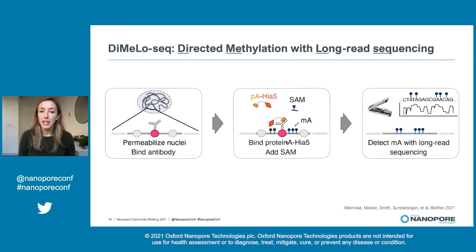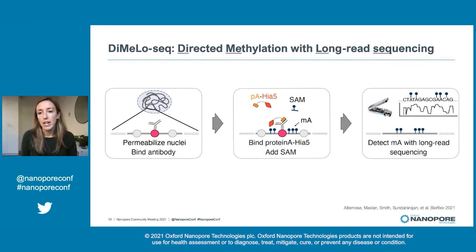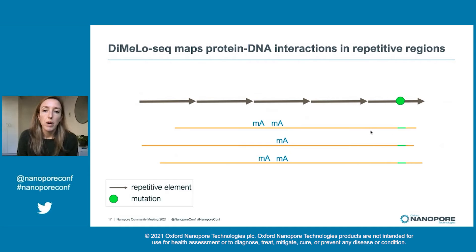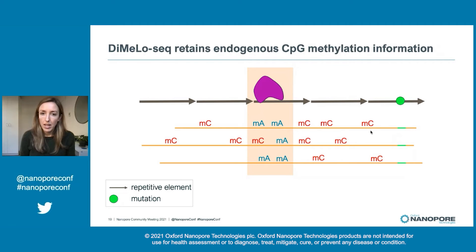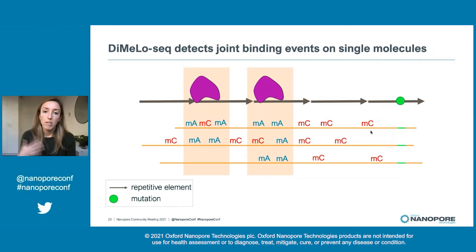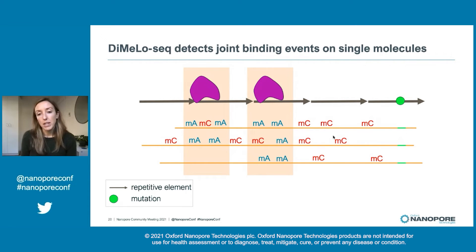We then directly read out this methyl adenine mark using Nanopore sequencing. Nanopore really enabled the development of this technology because it gave us a way to directly read out methyl adenine marks on long single molecules of DNA. What we end up with is long reads of DNA where we have deposited this methyl adenine mark to indicate where our protein is bound. We're also retaining endogenous CpG methylation information and reading that out with Nanopore. We can look at joint binding events on a single molecule — all of this information is contained within the molecules we're sequencing.